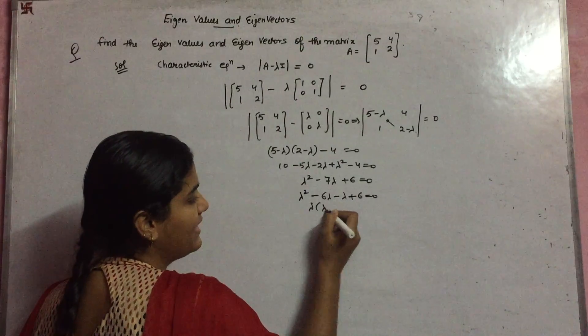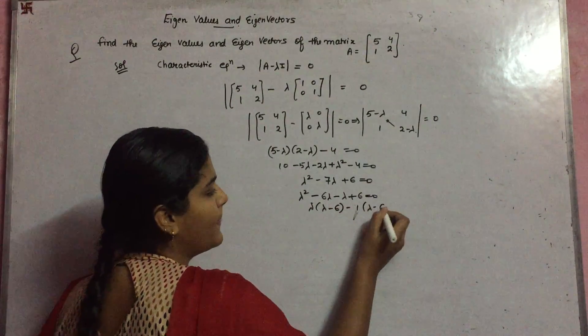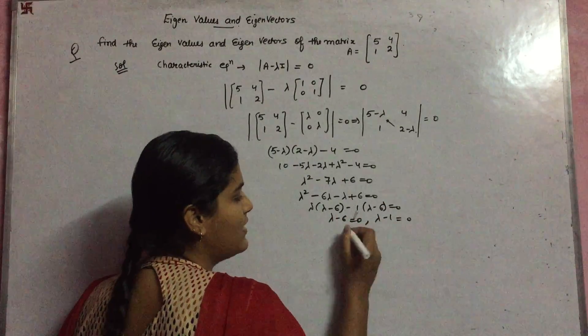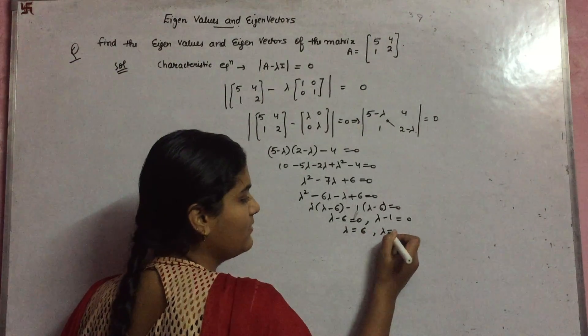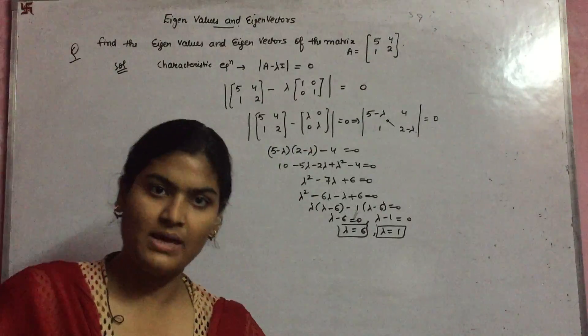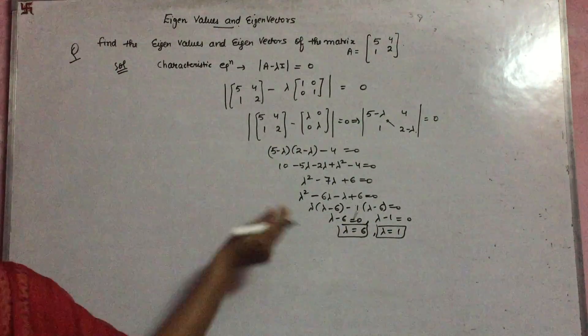The factors become λ - 6 = 0 and λ - 1 = 0. So λ = 6 and λ = 1. These are our two eigenvalues. Now for finding the eigenvectors, what do you have to do?